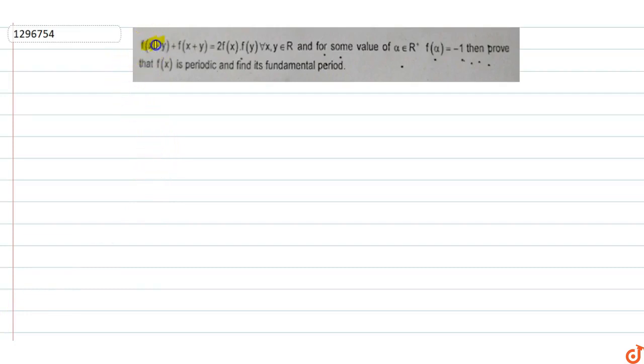This question: if f(x-y) + f(x+y) = 2f(x)f(y), where x and y belong to R, and for some value α ∈ R+, f(α) = -1, then prove that f(x) is periodic and find its fundamental period.